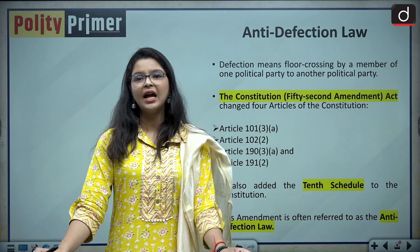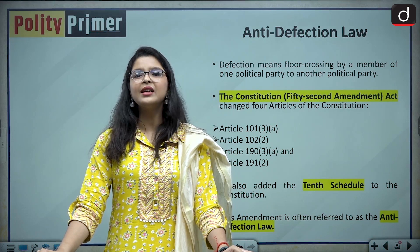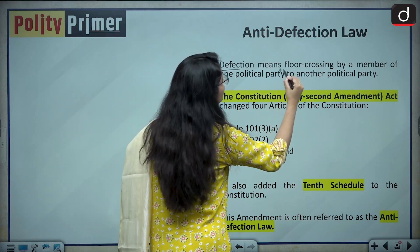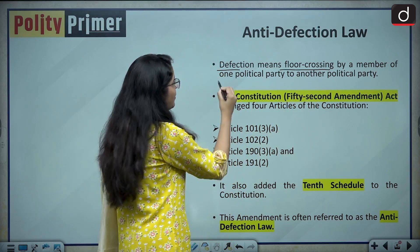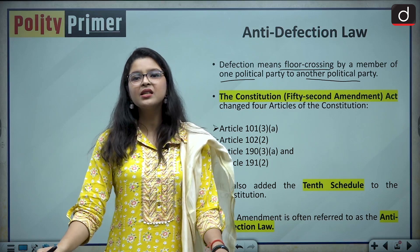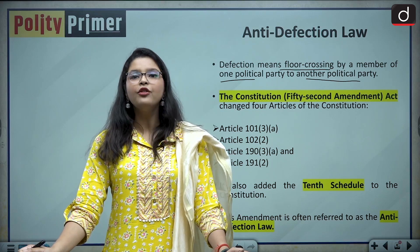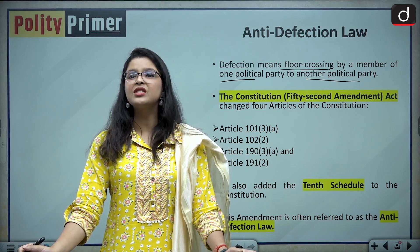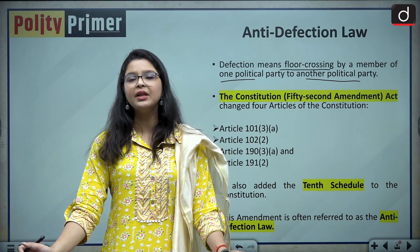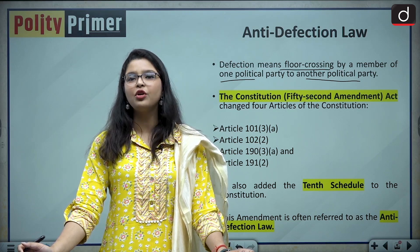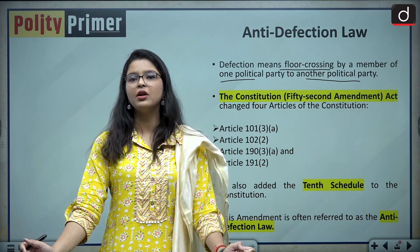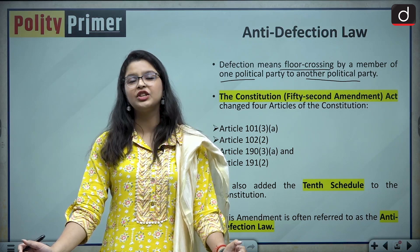Before we see the history and origin, let us discuss the meaning of the term defection. Defection means floor crossing by a member of one political party to another political party. In parliamentary parlance, the floor is a neutral area, and floor crossing means that a member has changed from his original political affiliation to some other political affiliation — for example, a member of the Indian National Congress joins BJP, or a member of BJP joins Indian National Congress.